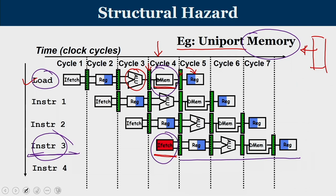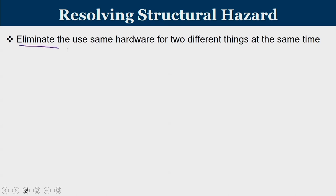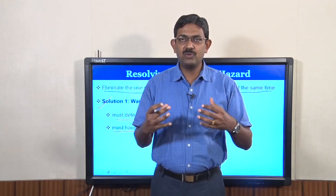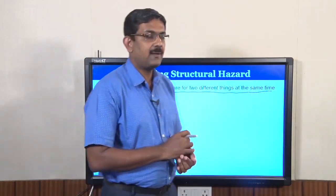This scenario is known as a structural hazard due to one read port in the memory. To resolve it, we must eliminate simultaneous use of the same hardware. The first solution is to detect a hazard and stall one of the instructions. When two instructions are going to access the same memory at the same time, we detect the structural hazard and delay one instruction, inserting a bubble. The second approach is to duplicate the hardware — having more units where the operation can be performed allows both instructions to make progress.